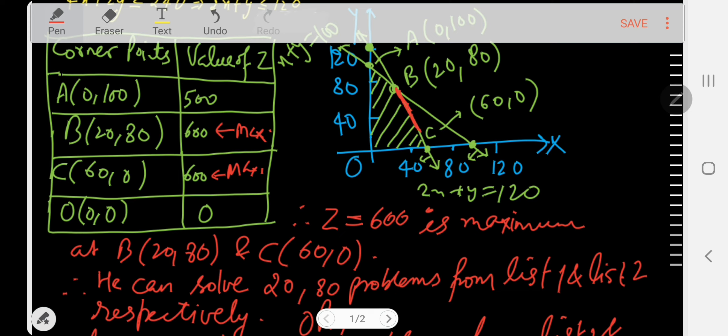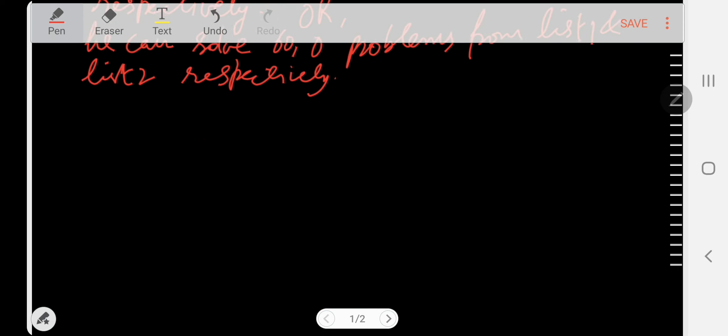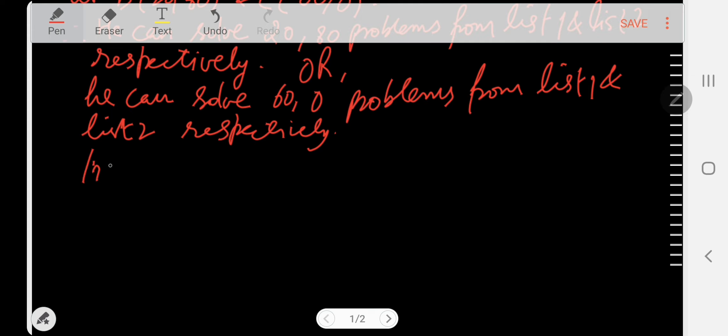But now comes the main thing that I need to discuss here with you. If you take any number of points on this portion of line segment BC, which I just turned red, means if you take any point on the line segment BC and put that point in Z, you will get 600 again. That means Z will be 600 at each point on the line segment BC.